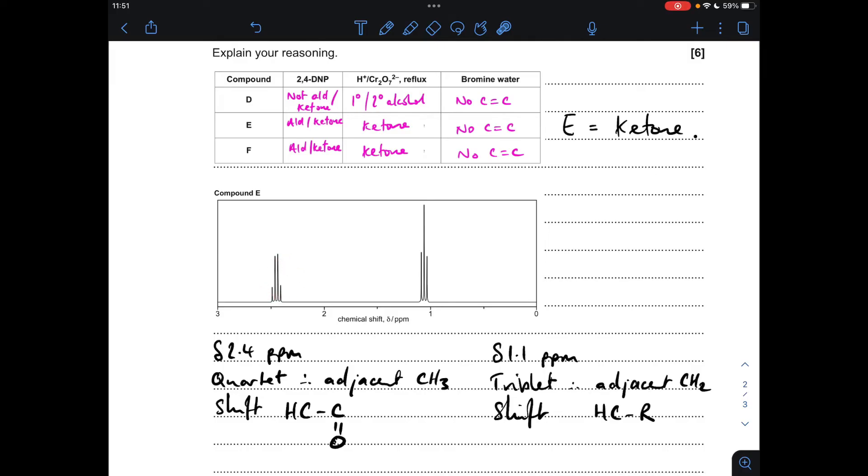Okay, so looking at this signal first, we've got a quartet at delta 2.4 ppm. That means there's an adjacent CH3, and the shift is H to C, the C double bond O, which is consistent with the fact that it's a ketone. And the other signal is a triplet, so therefore there's an adjacent CH2 with a shift of H to C to R. So the fact that we've got five carbons but only two sets of hydrogen environments means we've got some symmetry in this structure.